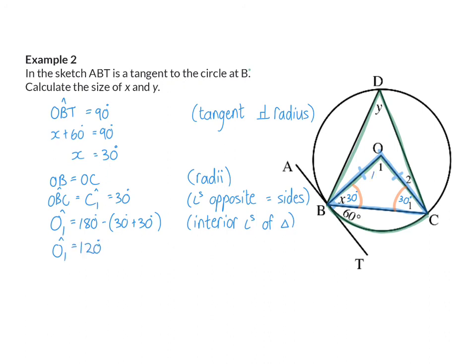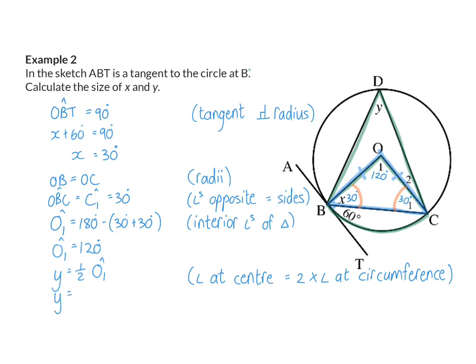Now that I know angle O1 is 120 degrees, I can move on to angle Y. Y will be half of angle O1. My reason: angle at the center is twice the angle on the circumference. And that means Y is half of 120, so Y equals 60 degrees.